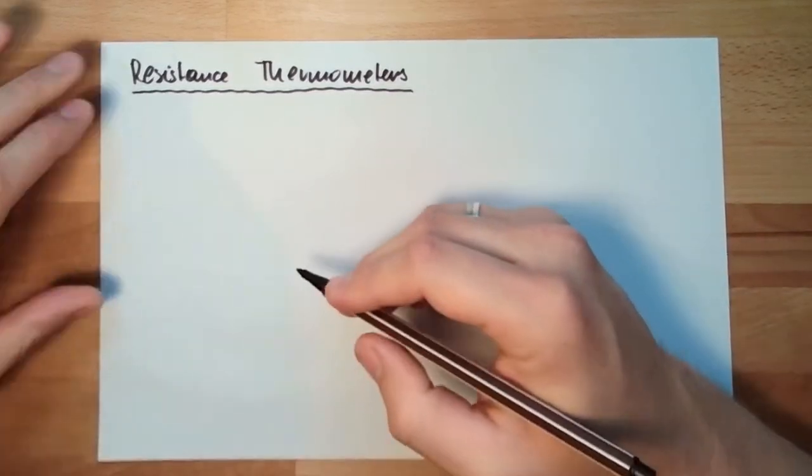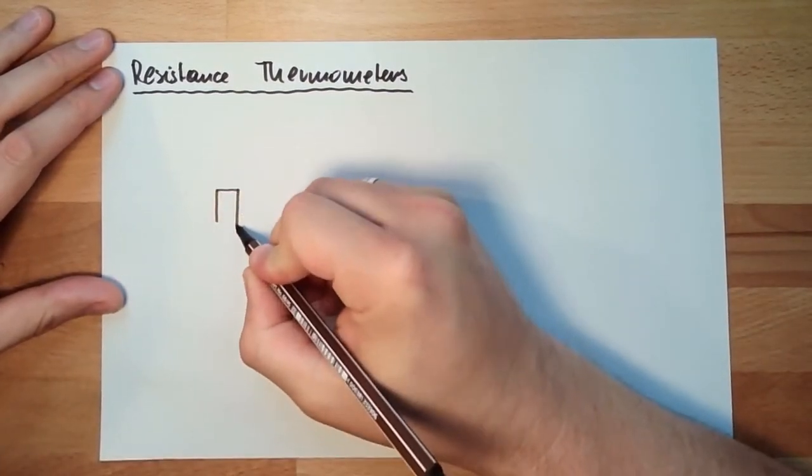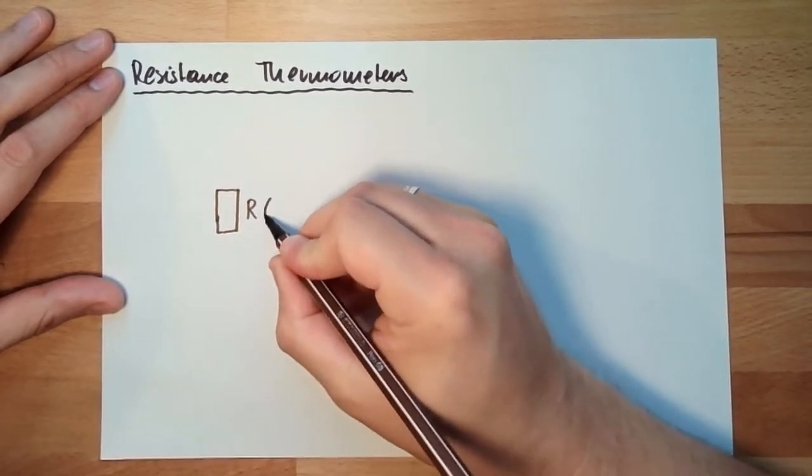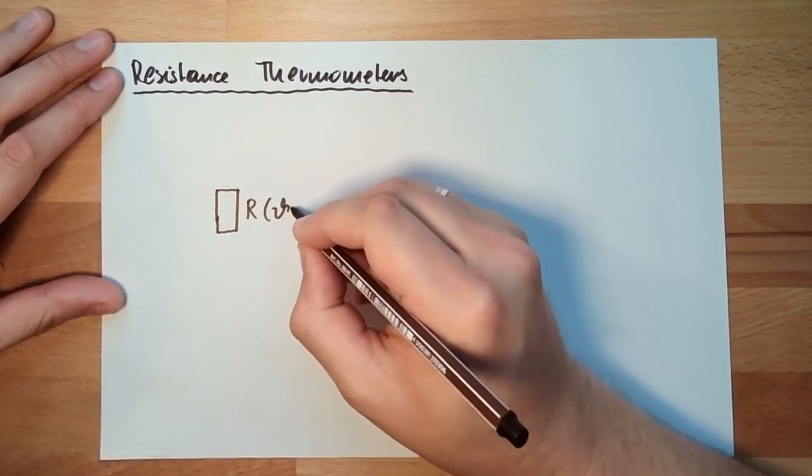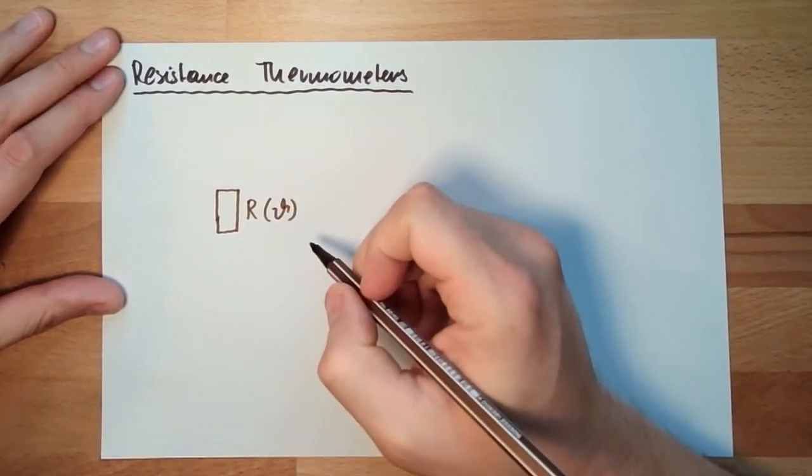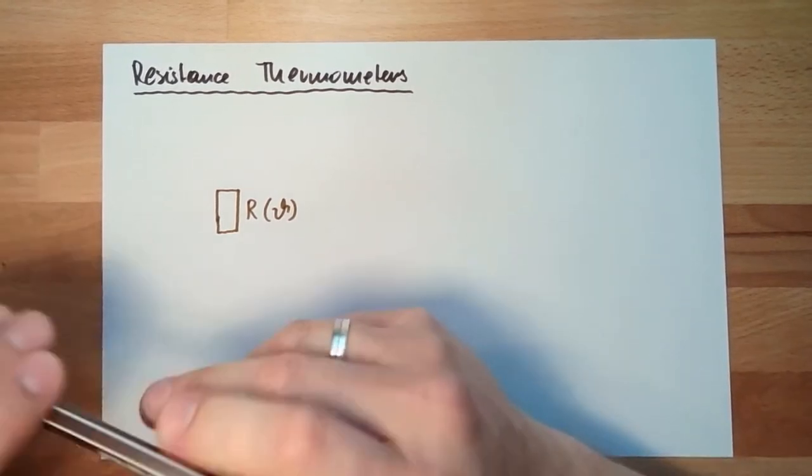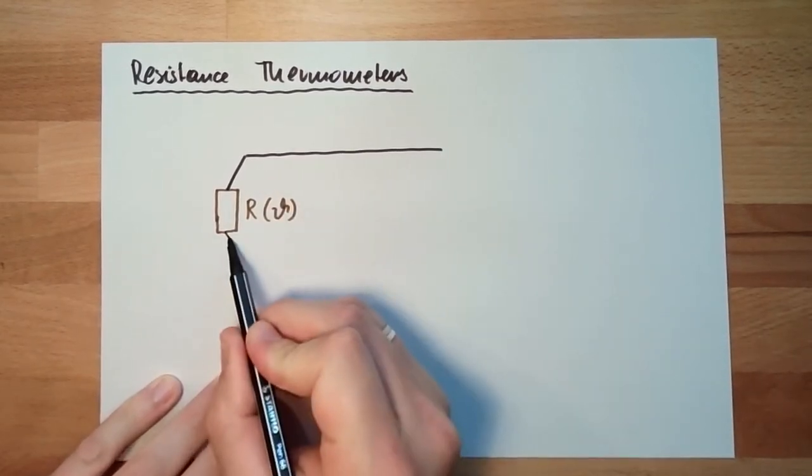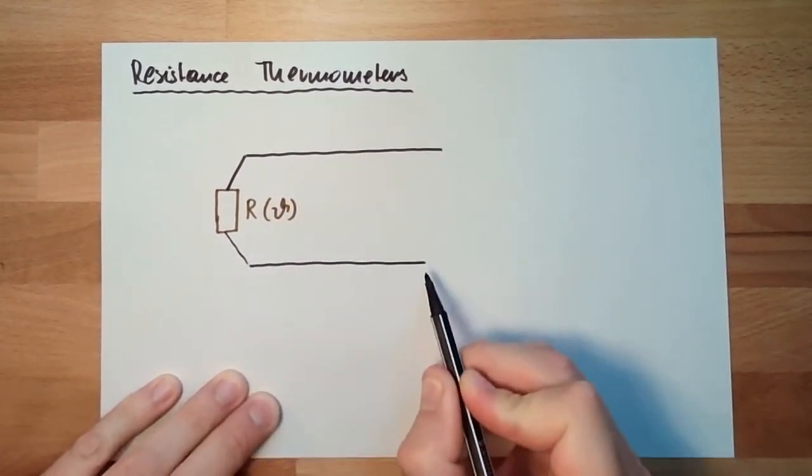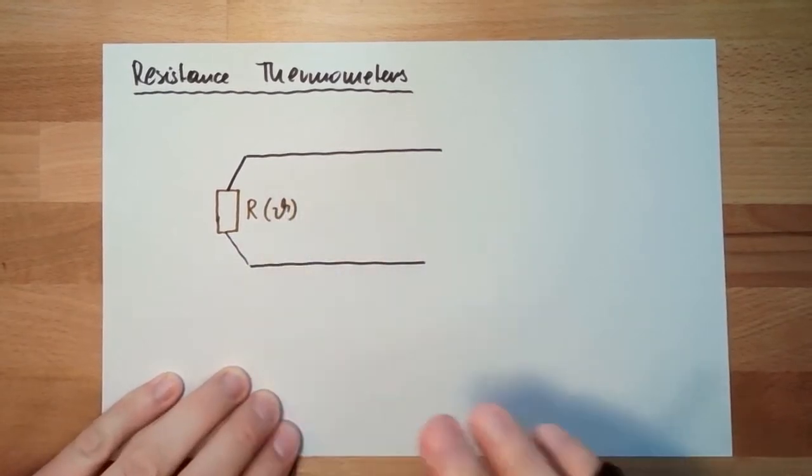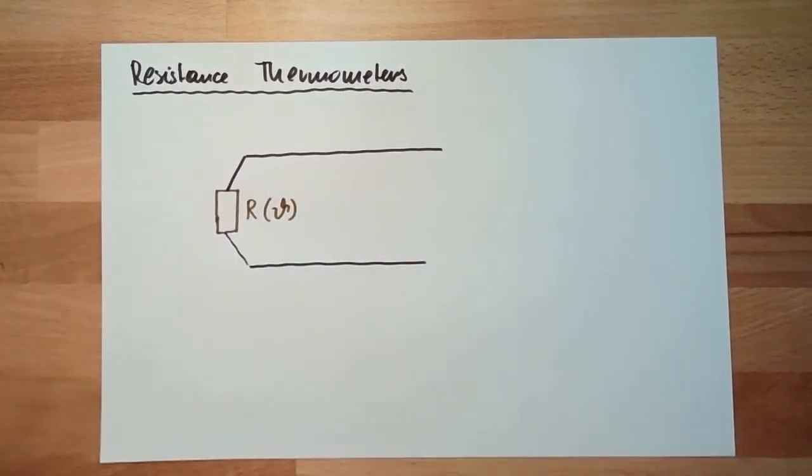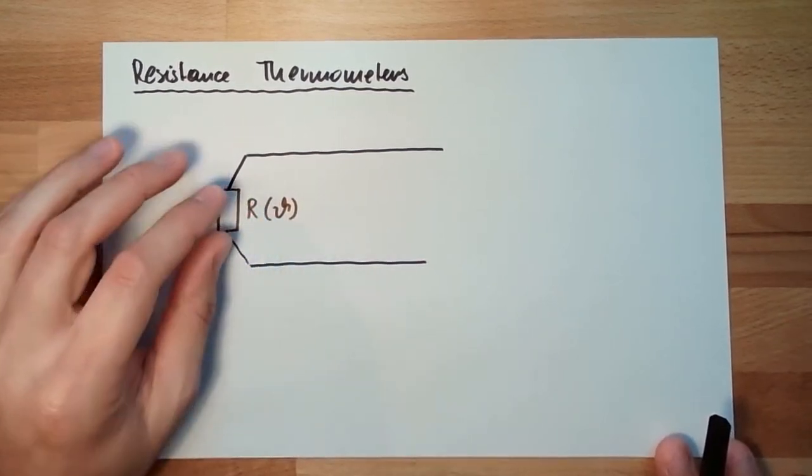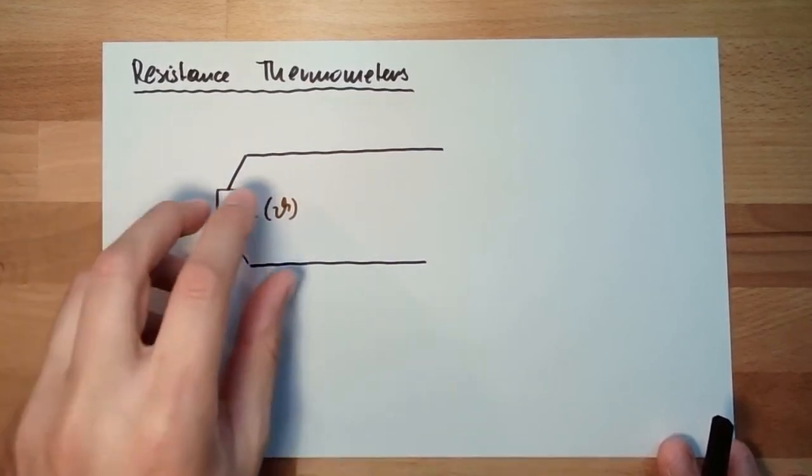We have some sensor. This time the sensor is some resistor which is changing its resistance with the temperature. I measure the resistance value and when I know which material I have and which resistance I should have at a certain temperature, I can derive from this the temperature.